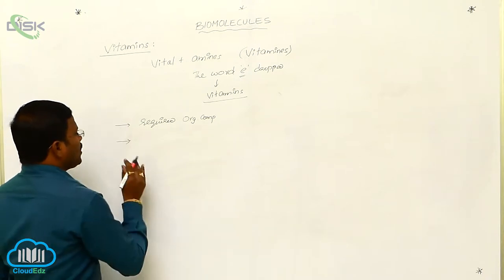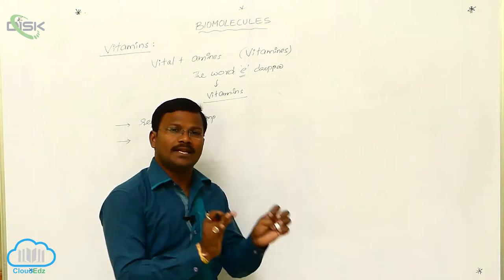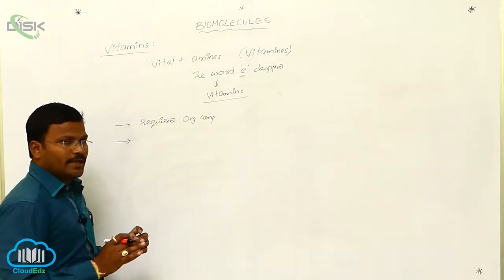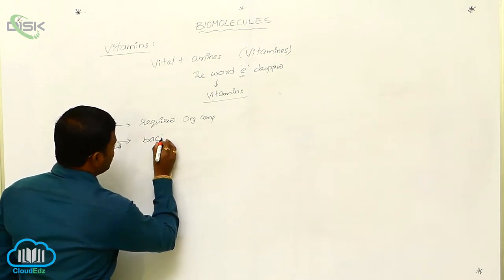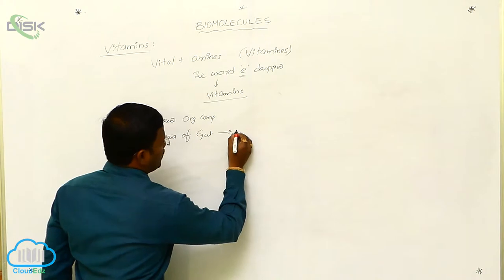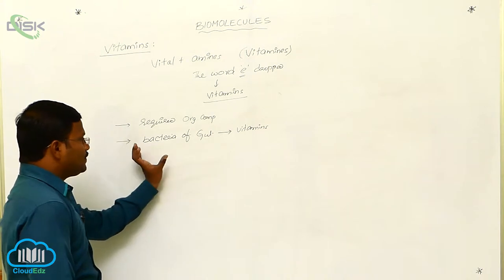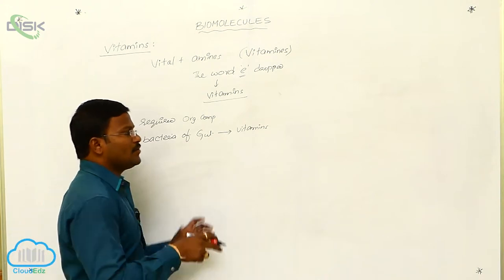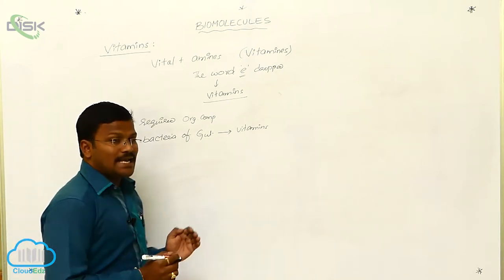Almost all types of vitamins are biosynthesized and available in plant material or the plant body, whereas these vitamins are not available in the animal body, especially in the human body. An exception is that bacteria present in the gut can release vitamins which are used by us. Except for this condition, there is no biosynthesis of vitamins in our body.